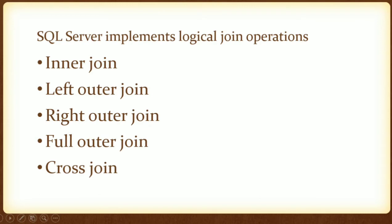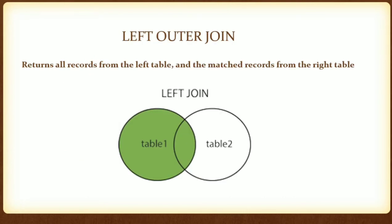Next, left outer join. Left outer join returns all records from the left table and the matched records from the right table.